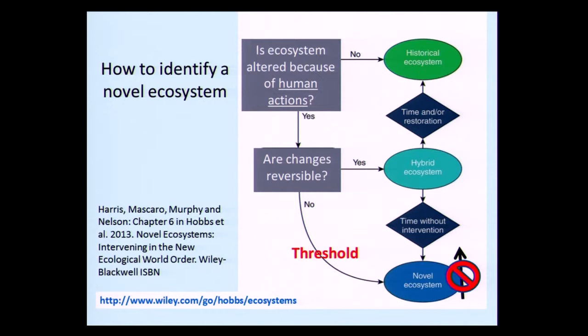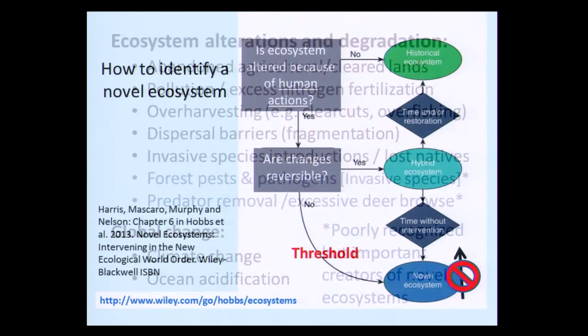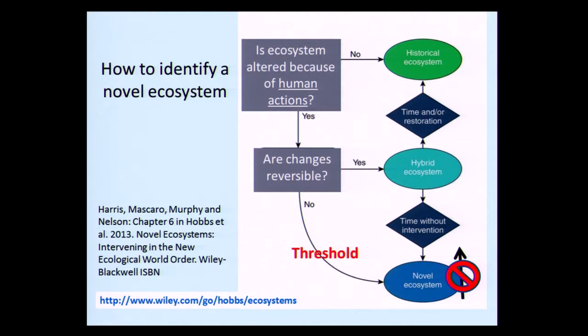To identify a novel ecosystem, first ask: is it altered because of people? If it's natural succession, that's different from human degradation. If not altered by people, you have a historic system. If altered by people, are the changes reversible? If reversible, you may have a hybrid ecosystem that might return to a historic state. If you've passed a threshold where you cannot return, you're in a novel ecosystem mode. A hybrid system may also go to a novel ecosystem without intervention.